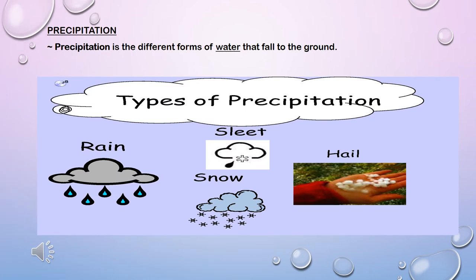Lastly we will look at precipitation. Precipitation is the different forms of water that fall to the ground. Rain, sleet, snow and hail are the types of precipitation.